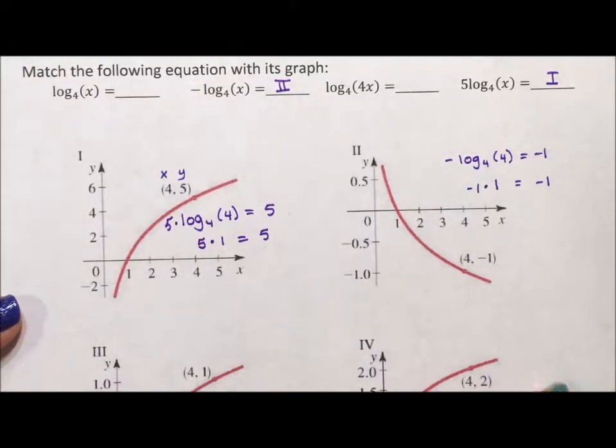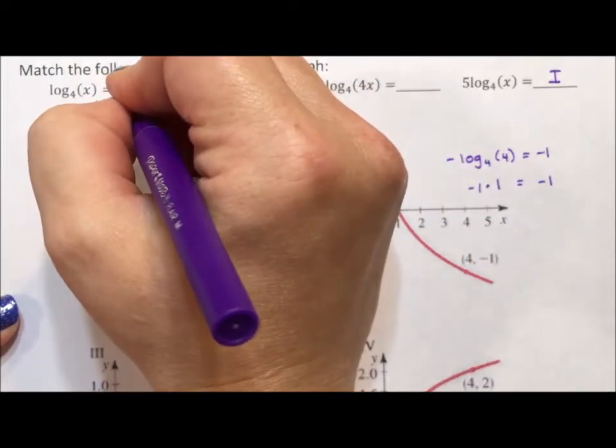For our third graph, we can't see the graph, but we can see the ordered pair (4, 1). If we start again with log base 4 of 4 equals 1. Well, 4 to what exponent is 4? That's 1. This one is actually true. So this one has to be 3.